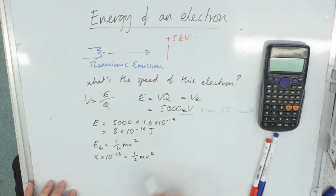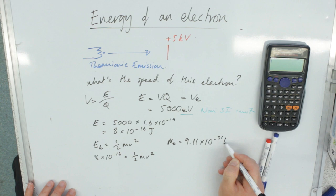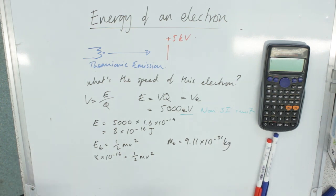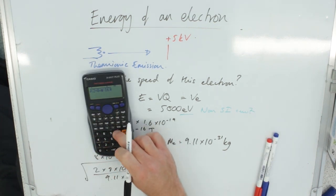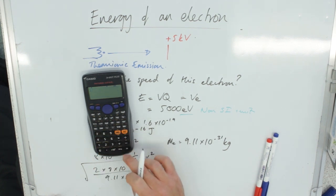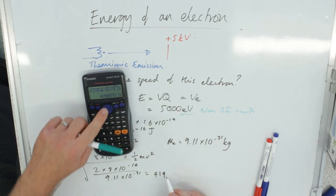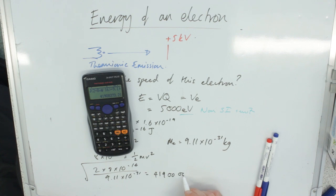And we know the mass of the electron is 9.11 times 10 to the minus 31 kilograms. Again, we must use SI units for mass of electron there. So times it by 2, divided by the mass, and square root it, gives me 419,000 or 4.2 times 10 to the 7 meters per second.